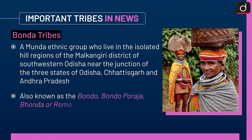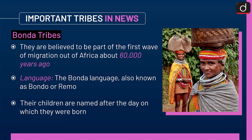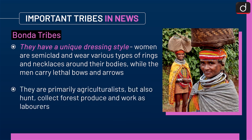Next is the Bonda tribe. It is a Munda ethnic group who live in the isolated hill regions of the Malkangiri district of southwestern Odisha, near the junction of the three states of Odisha, Chhattisgarh, and Andhra Pradesh. They are also known as the Bondo, Bondoporaja, Bhoonda, or Remo. They are believed to be part of the first wave of migration out of Africa about 60,000 years ago. Their language, the Bonda language, is also known as Bondo or Remo. Their children are named after the day on which they were born. Women are semi-clad and wear various rings and necklaces, while men carry lethal bows and arrows. They are primarily agriculturalists but also hunt, collect forest produce, and work as laborers. They are in the PVTG category.